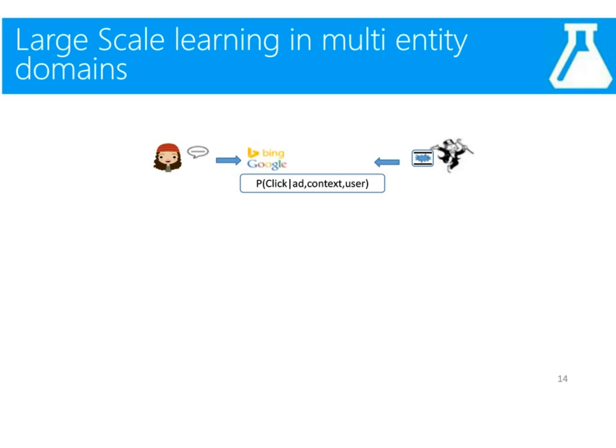Let's start with a simple example. Consider learning on very large data sets in domains where there are many entities. A simple illustration that all of you can relate to is prediction of clicks for online advertising. That's obviously an important problem, and it's a really interesting machine learning task because the estimation is pretty hard for reasons we'll describe.